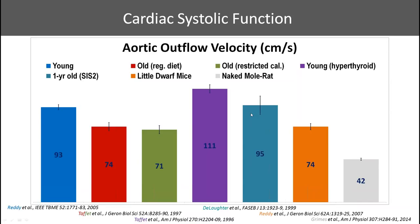A one-year-old CIS-2 mouse with excessive insulin growth factor 1 also has very high contractility initially, similar to hyperthyroid, but by one year it comes back toward normal — by which time the heart has hypertrophied so much that it is almost going to fail. Little dwarf mice have diminished systolic function to begin with but remain stable throughout their lifespan; in fact, dwarf mice live longer than wild type. Naked mole rats, a special case, live up to 30 years and also have very diminished systolic function, with values at two years and 24 years being very similar.